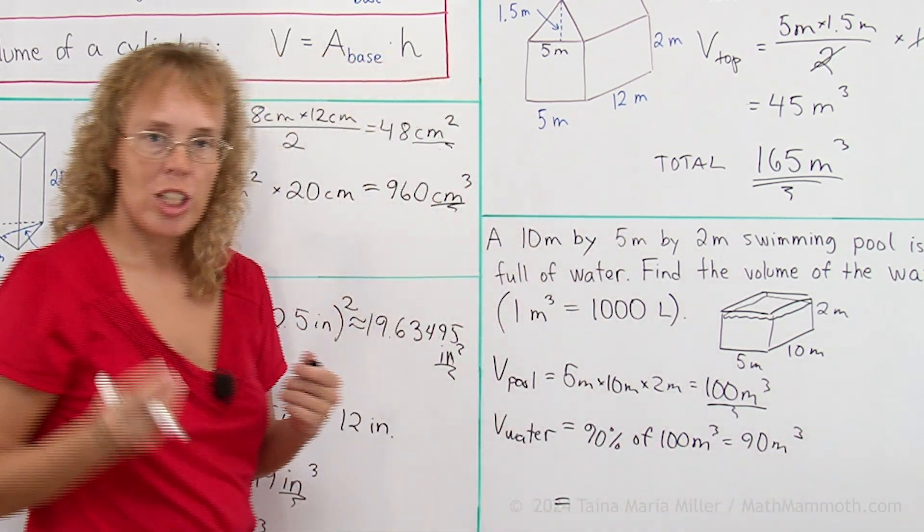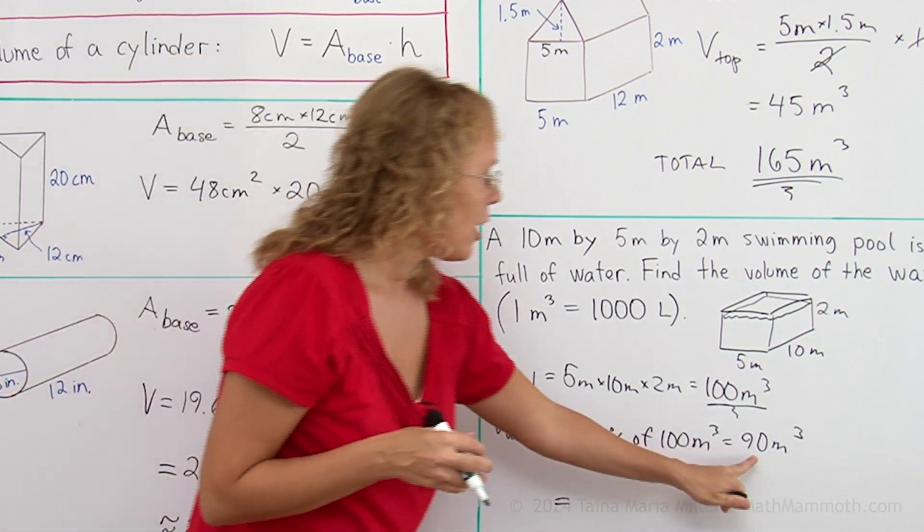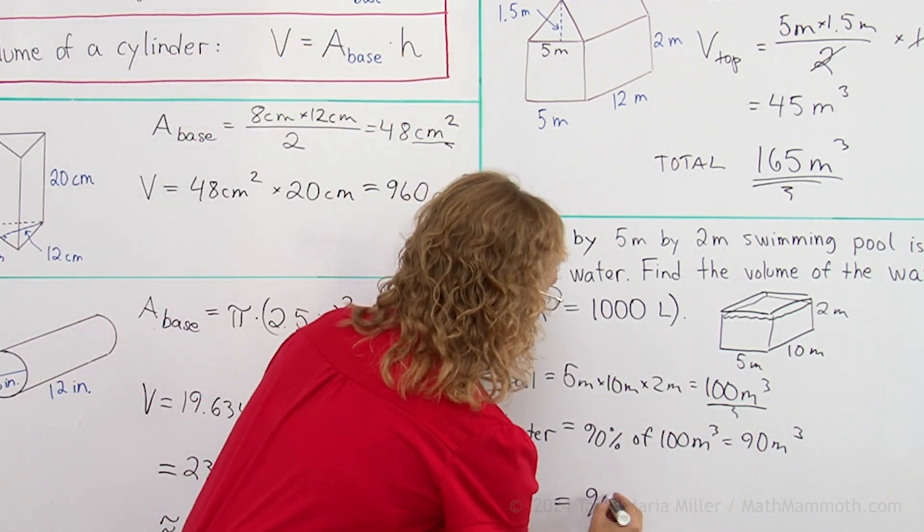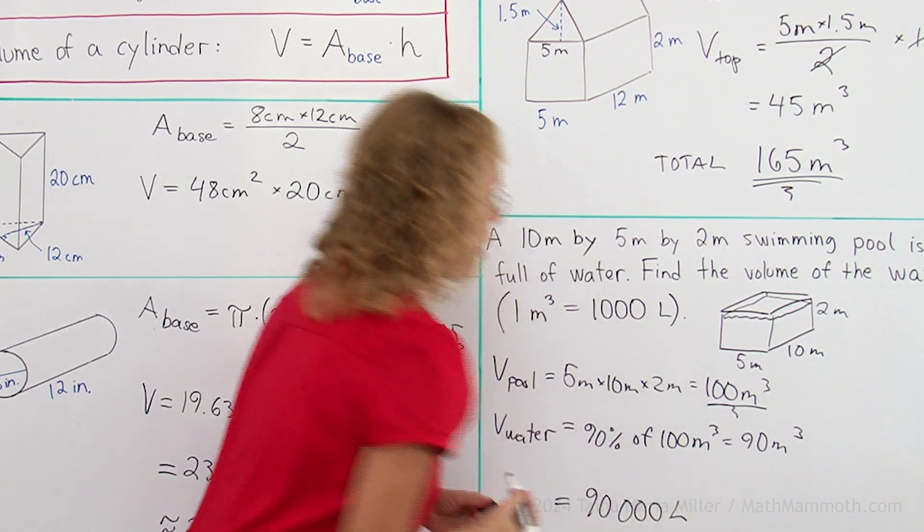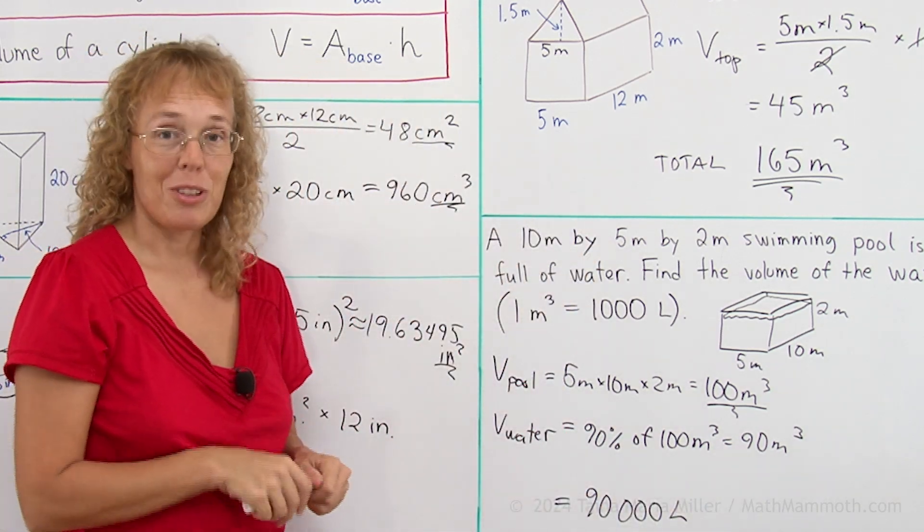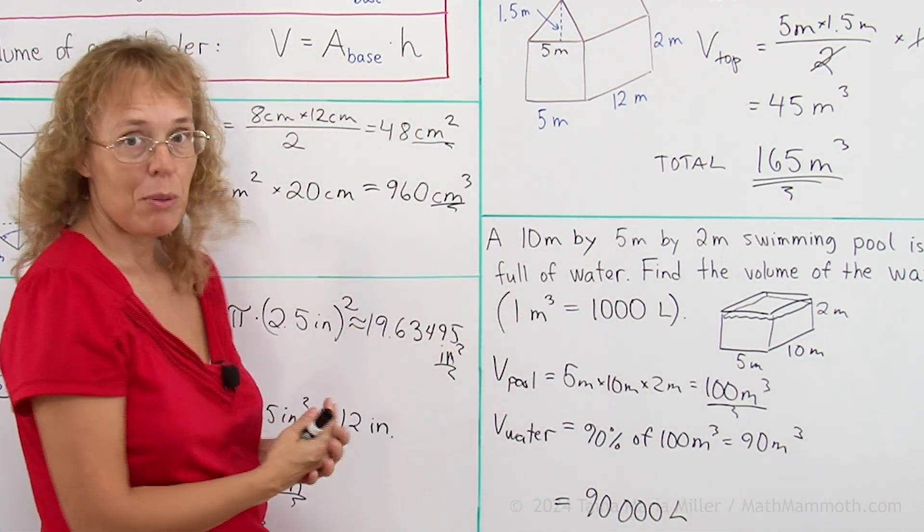And now we will just change it into liters, 90 cubic meters times 1000 is of course 90,000 liters. So it takes a lot of water in liters to fill up a swimming pool.